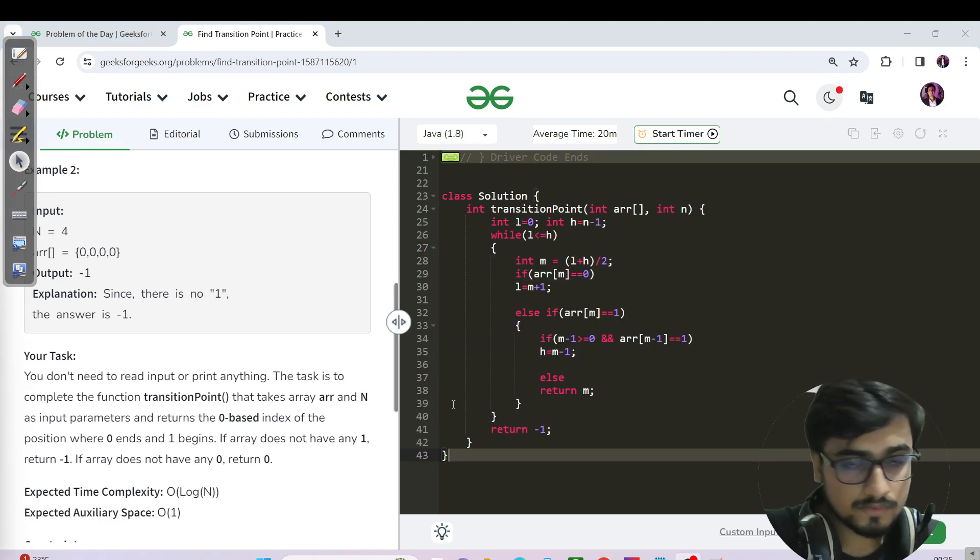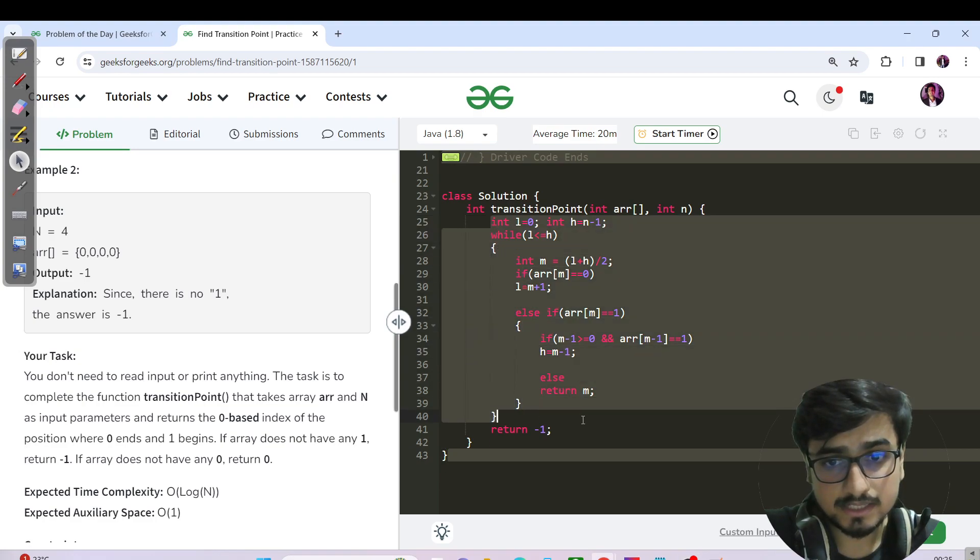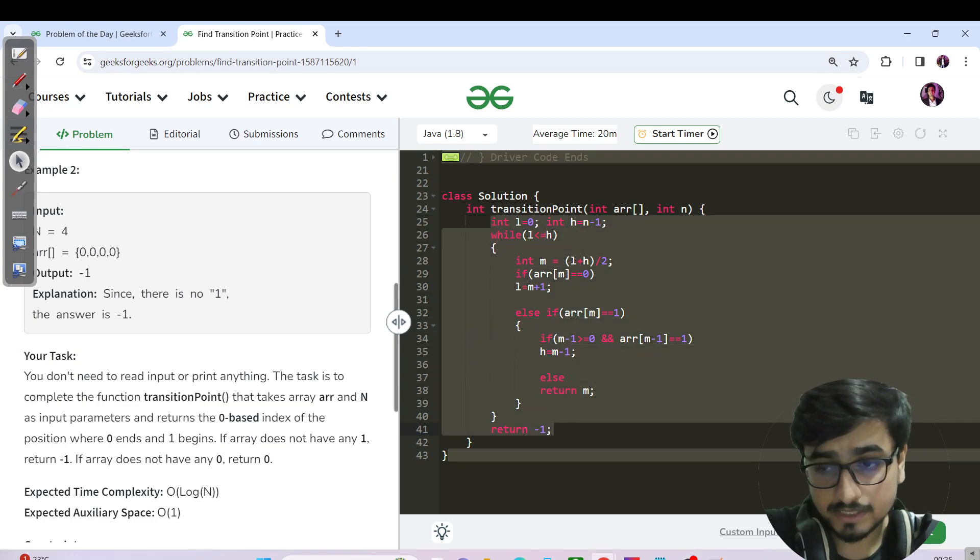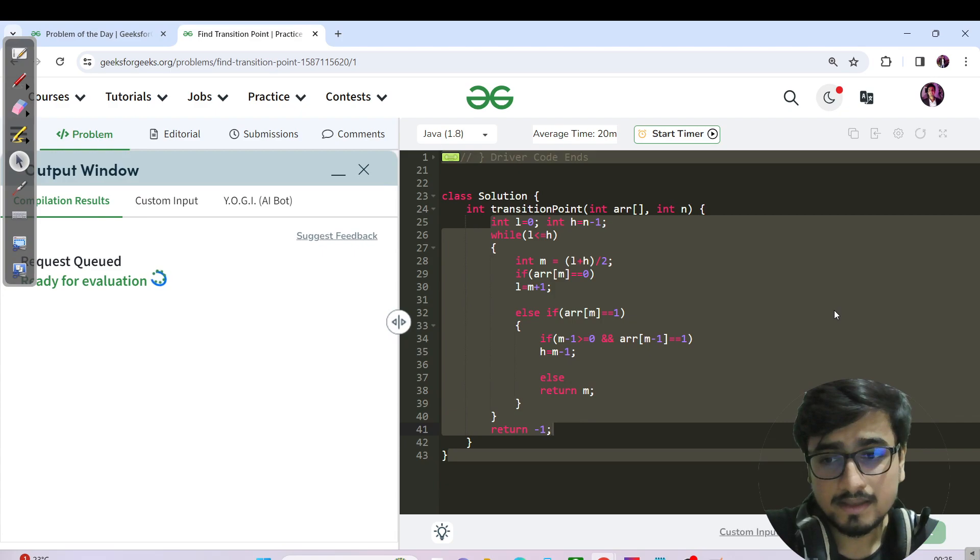So that's the Java code. The same thing we have written as we have seen in the dry run and the pseudocode. So I will not give you an explanation again, I will not give you a walkthrough. Let's just compile and run. Great, let's just hit the submit button.